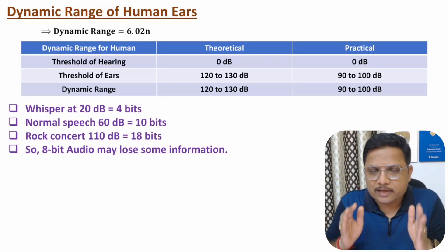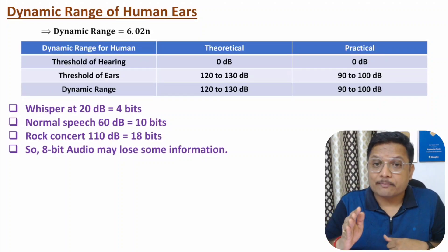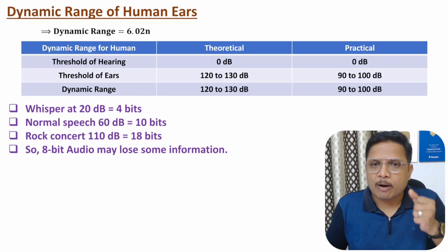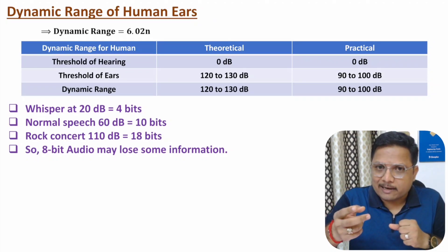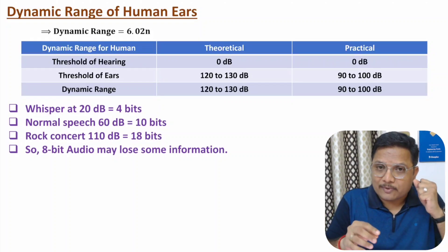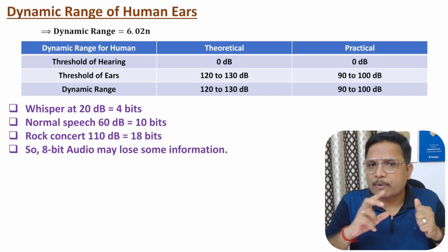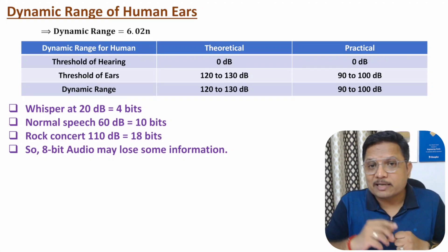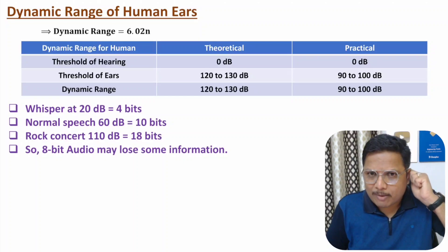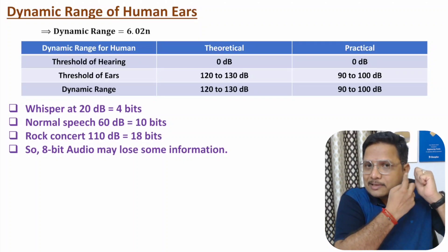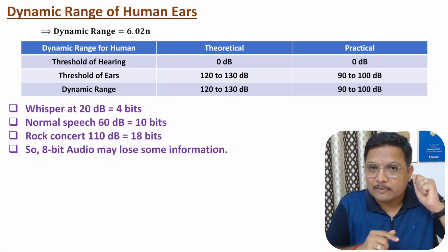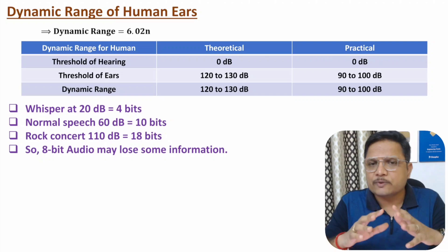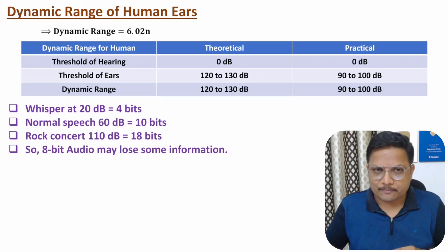If you have 8-bit audio, you may lose some information. For example, with a music signal, if you perform quantization at 8 bits per sample, you will lose information. For instance, on a mobile call, if you listen to music, you will observe that you are not getting proper information. The reason is that voice communication on mobile is quantized at 8 bits per sample, so you cannot listen to music properly — there is information loss.